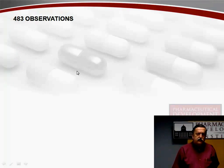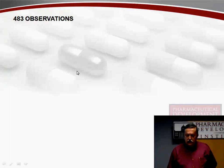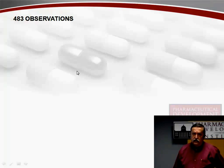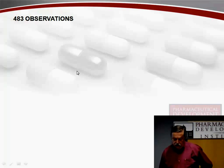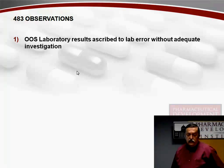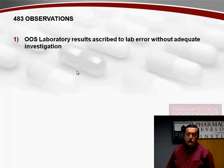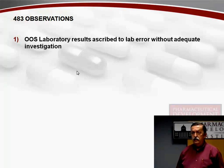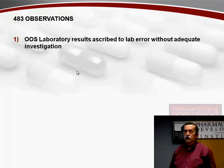Now some actual 483 observations. These are fairly common — not only does the FDA make these type of observations, but I also make them when I do my audits of company suppliers and other companies. Out of specification laboratory results are ascribed to lab error without adequate investigation. You get an out-of-specification laboratory result, it probably means the product is going to be rejected, and this gets your production people very excited.